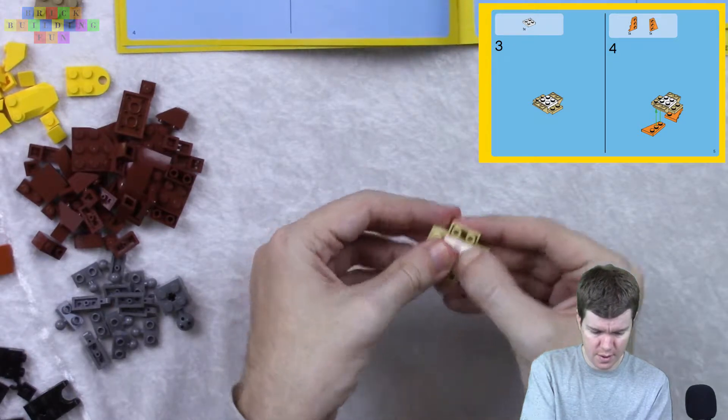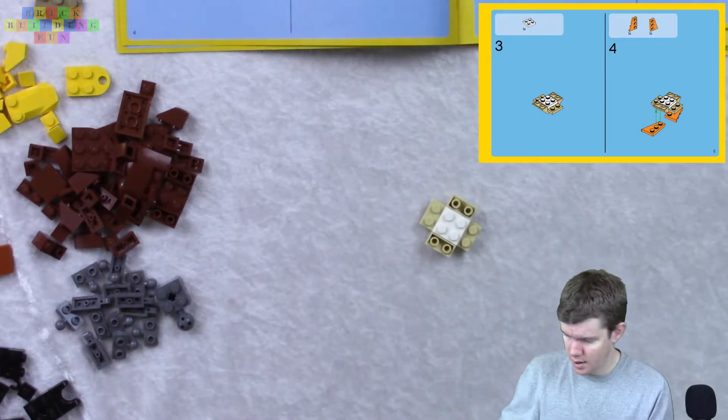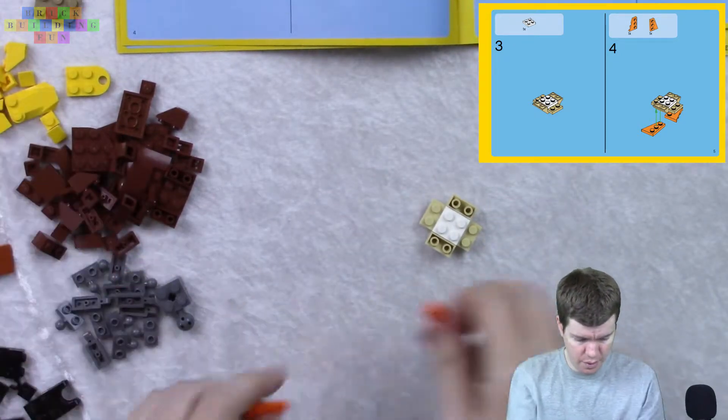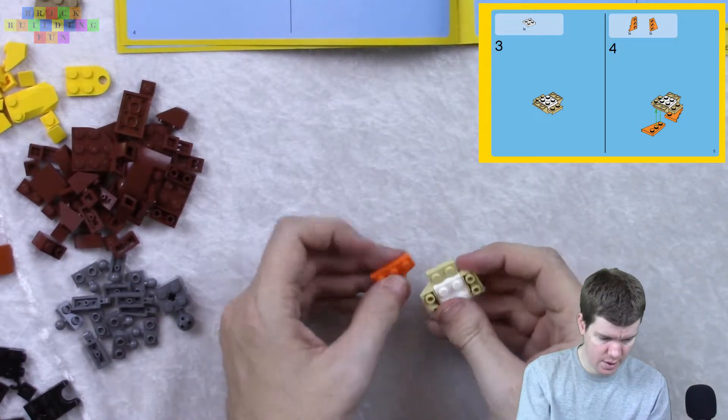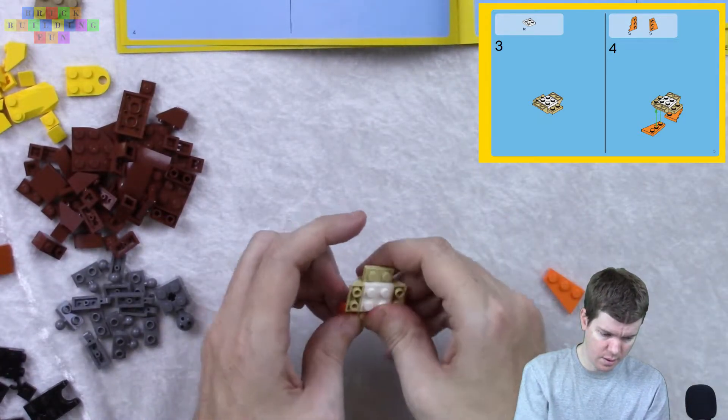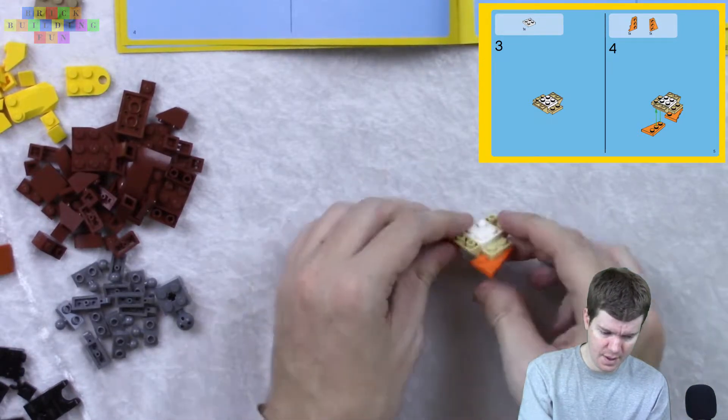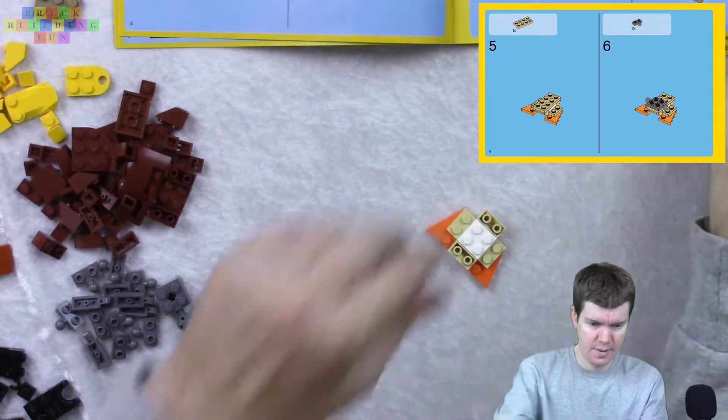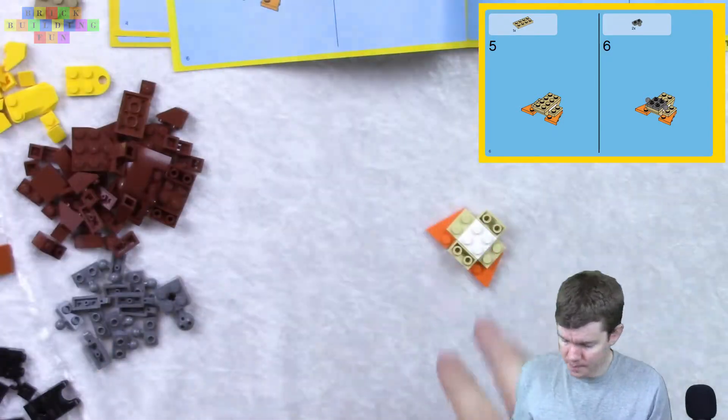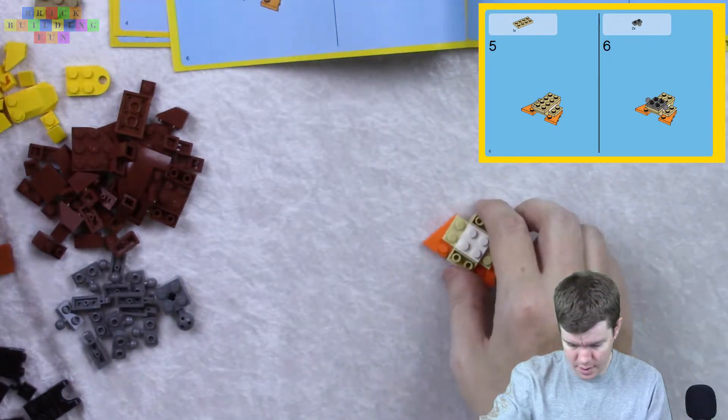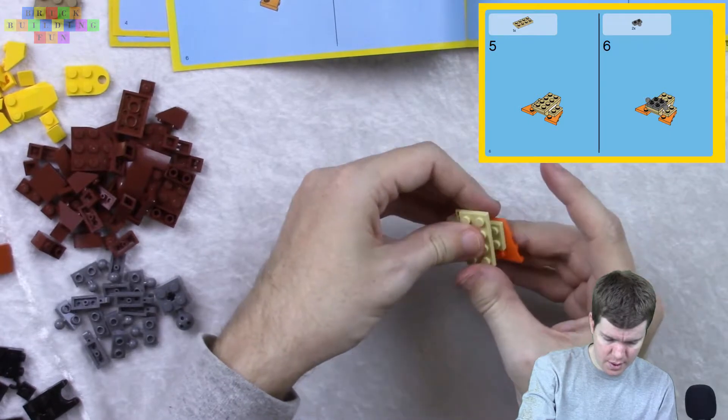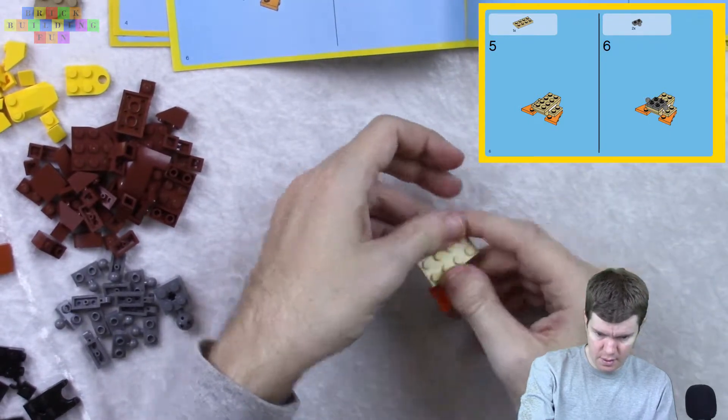One of these. Right there. Couple of wings. Couple of orange wings, in fact. They are going to go down here. Oh, these are the feet. Not wings. Let's see. Here we go. Another one of these. There we go.